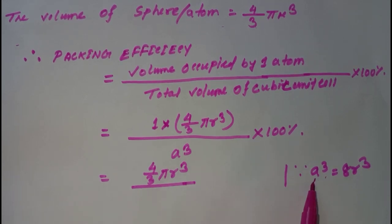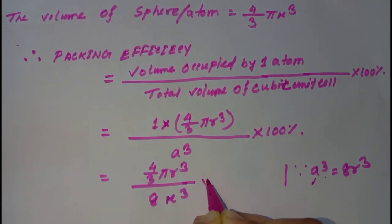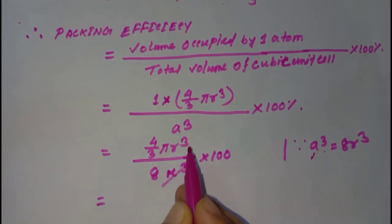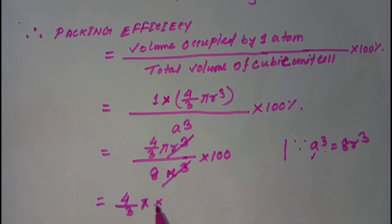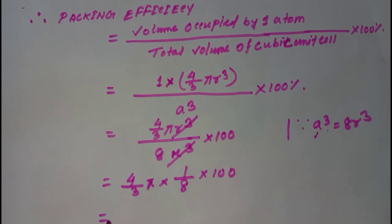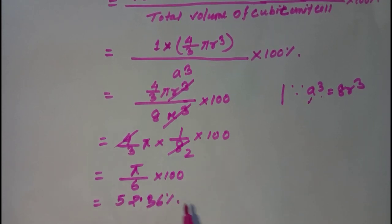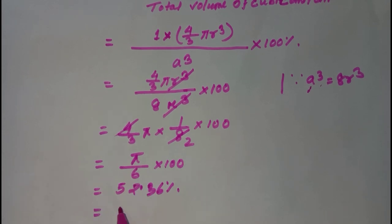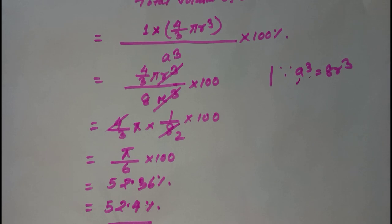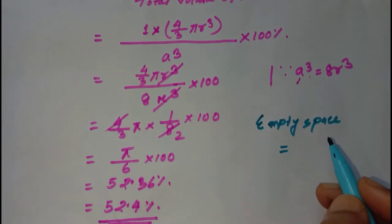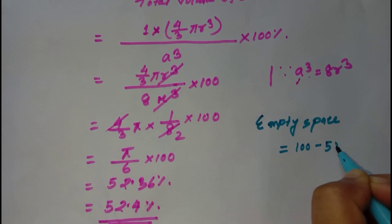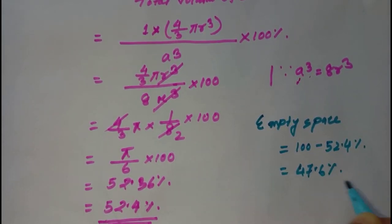The total volume of the unit cell a³ equals 8r³. Substituting: (4/3)πr³ divided by 8r³, the r³ terms cancel, giving (4/3)π × (1/8) × 100 = π/6 × 100 = 52.36 percent, approximately 52.4 percent. Therefore the packing efficiency of a simple cubic unit cell is 52.4 percent, and the empty space is 100 − 52.4 = 47.6 percent.